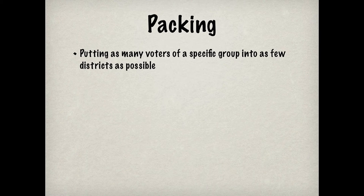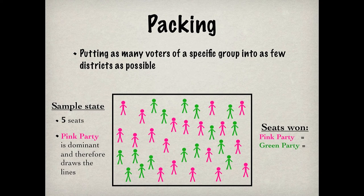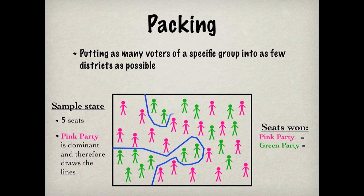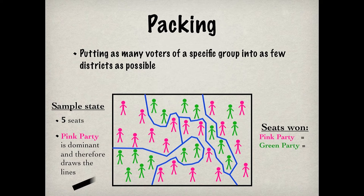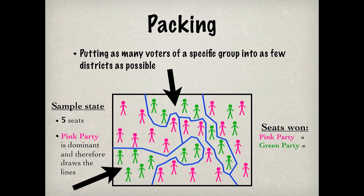Packing refers to putting as many voters of a specific group into as few districts as possible. When the Pink Party does this to the Green Party, like this, the Green Party wins two districts easily, but there aren't enough Green Party voters in other districts to enable it to win more. Therefore, the Pink Party wins three districts, while the Green Party wins only two.